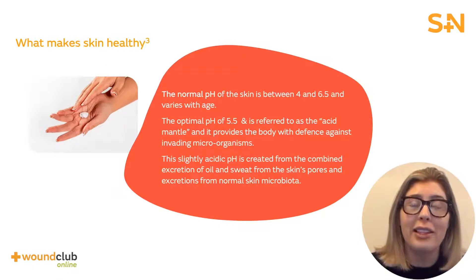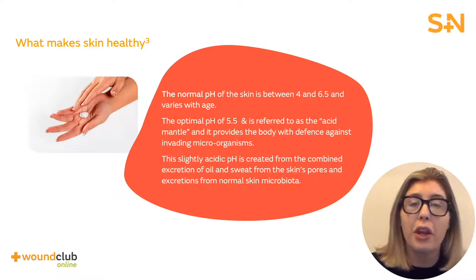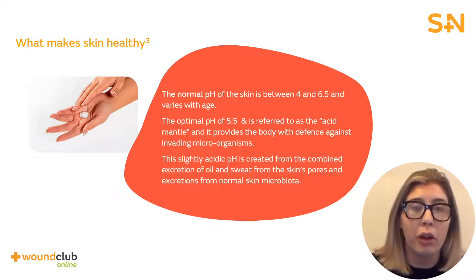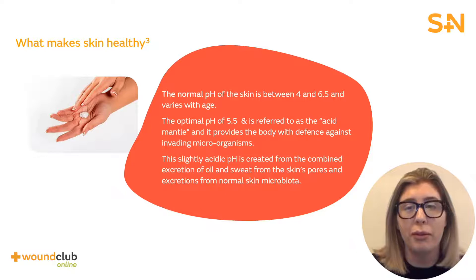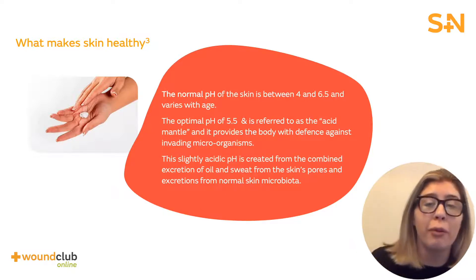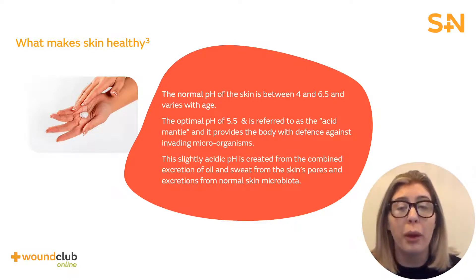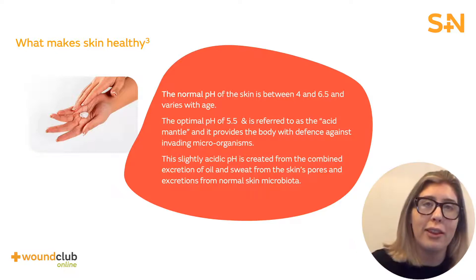If you think back to science lessons at school, we had the pH scale, which showed how acidic or alkaline something was. Our skin has a pH of around four to six point five, which can vary with age. Essentially, the skin is slightly acidic due to a combination of excretions of oil and sweat, as well as excretions from our normal skin microbiota — we refer to this as the acid mantle.